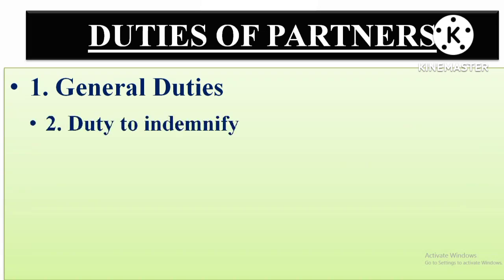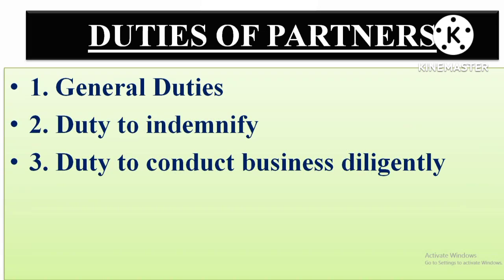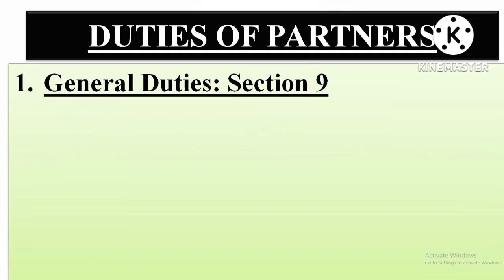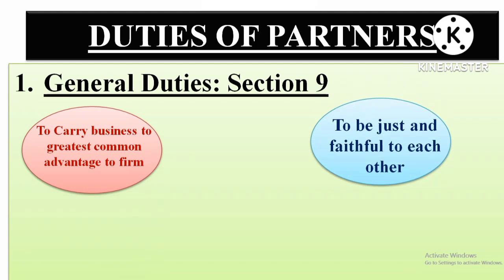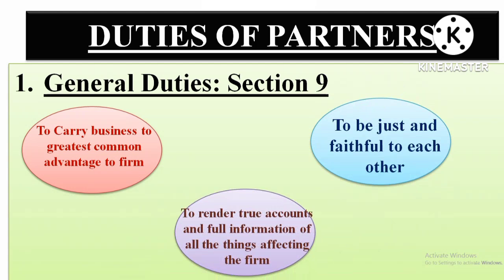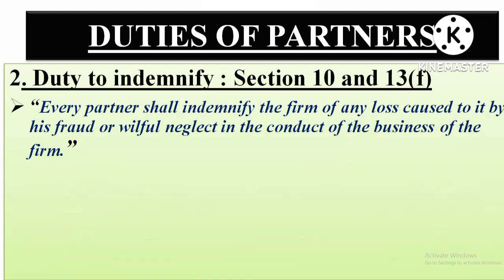After that, we come to the duties of partners. There are general duties, then a specific duty to indemnify, and then a duty to conduct business diligently. First, the general duties: section 9 of the Partnership Act deals with general duties. These include the duty to be faithful, the duty to render true accounts, and the duty that if anything affecting the firm — whether positively or negatively — arises, the firm must be fully informed. These are the general duties given under section 9.